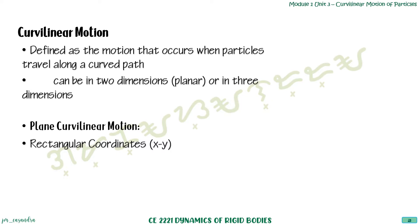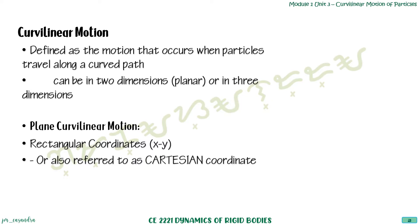Or we could also define it in terms of yz, xz, or xyz. This is also referred to as Cartesian coordinate motion.